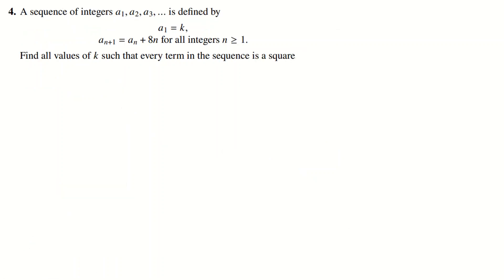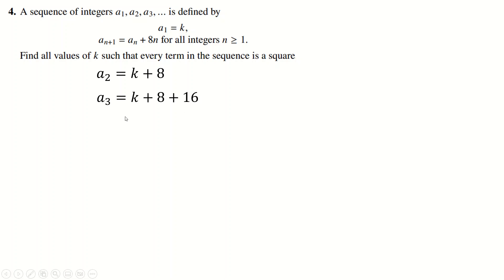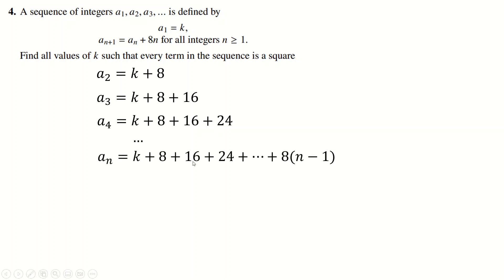Question number four — a nice iteration question. With a₁ = K, we get a₂ = K + 8×1, then a₃ = previous term + 8×2, a₄ = previous term + 8×3, and so on. We can see a pattern: aₙ = K plus all multiples of 8 up to 8×(n−1). You can check K = 1 makes the first few terms perfect squares: 1 is square, 1 + 8 = 9 is square, 9 + 16 = 25 is square, and so on. So K = 1 is a good candidate — but is it the only one?